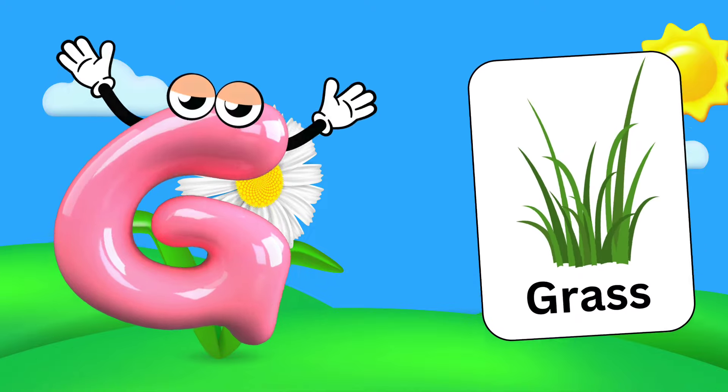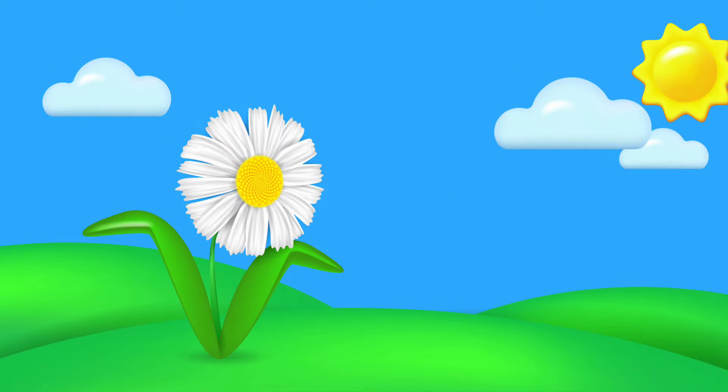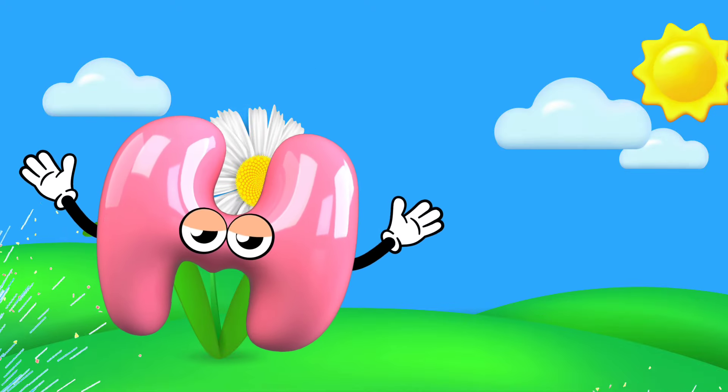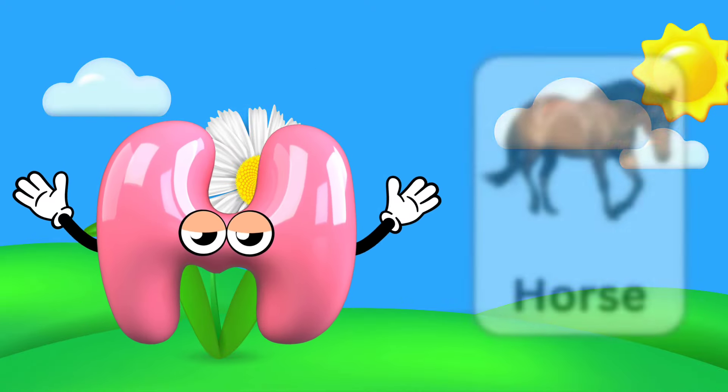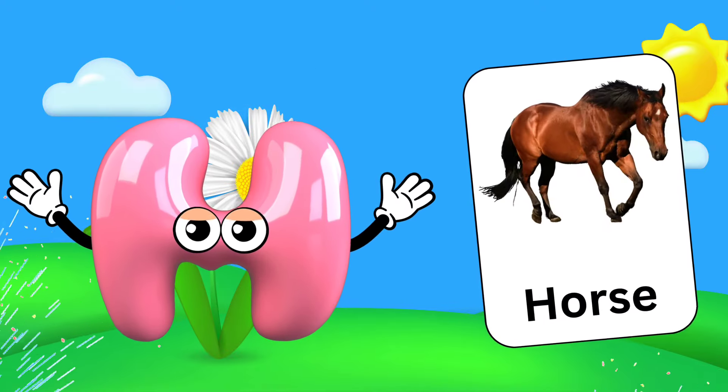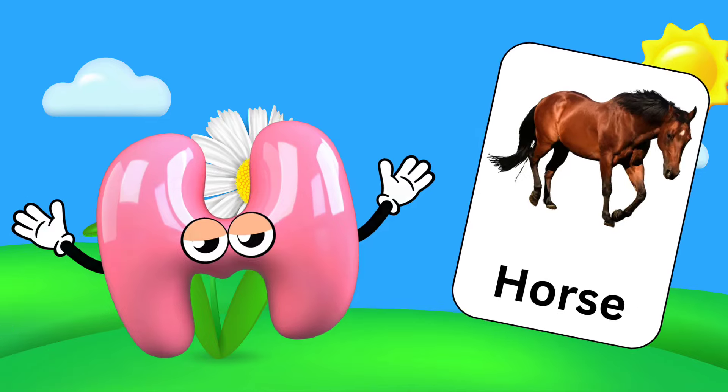G is for Grass. G, G. Grass. H is for Horse. H, H. Horse.